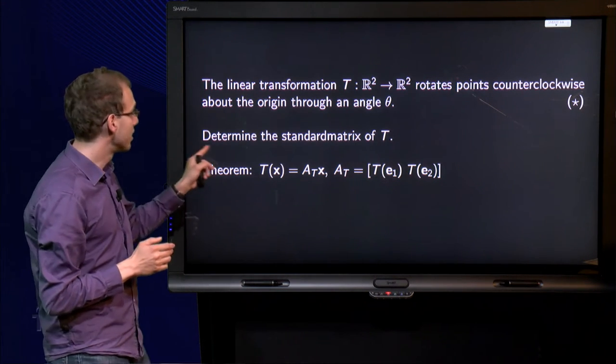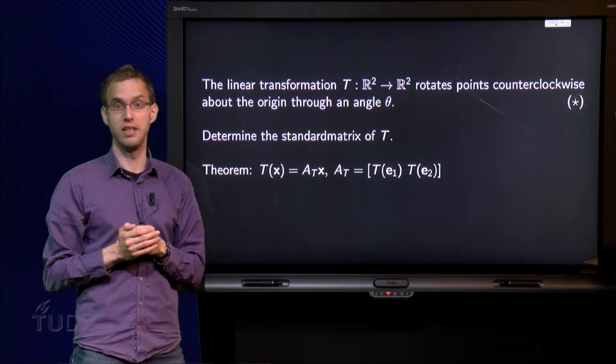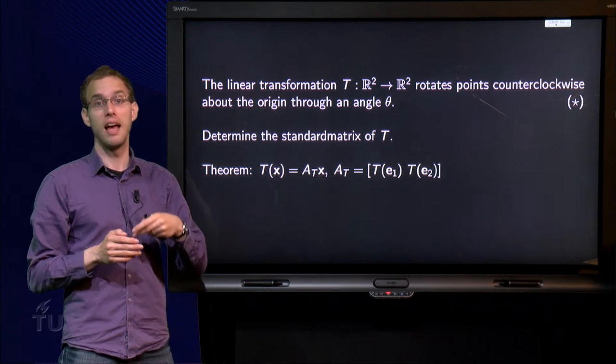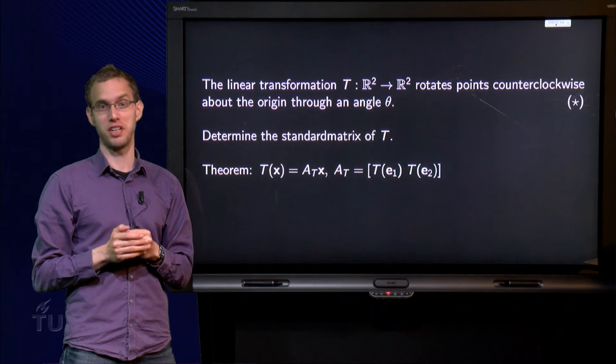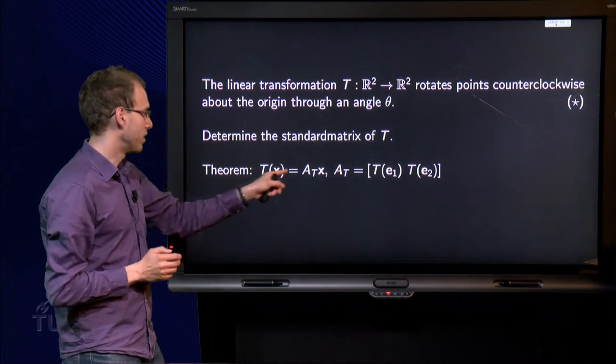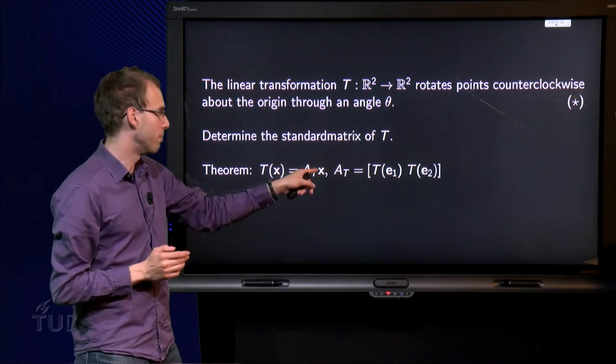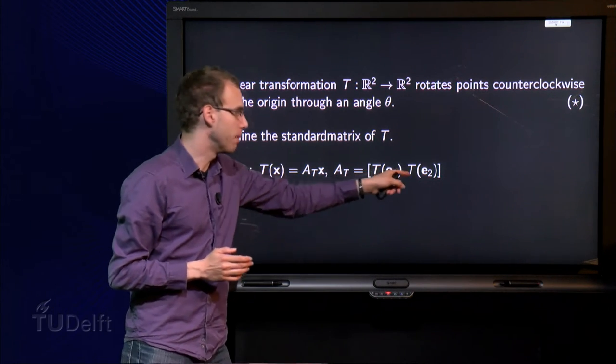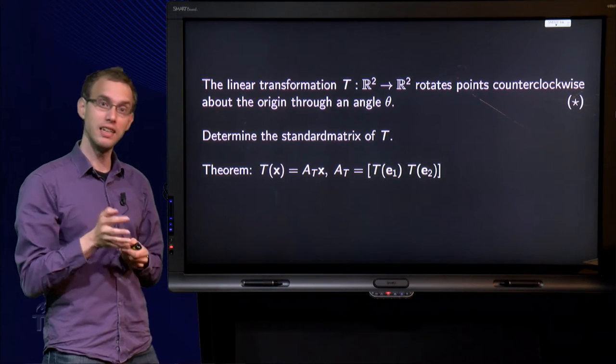How can we find the standard matrix of T? How can we find the algebraic description of this transformation? We have learned the theorem T(x) = A_T times x, where the matrix A_T can be found by computing the images of e₁ and e₂.